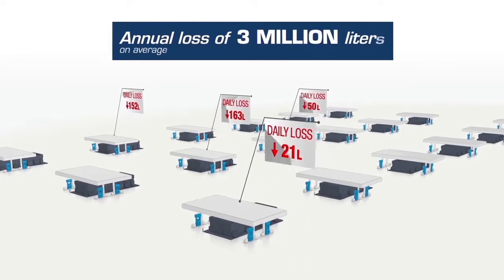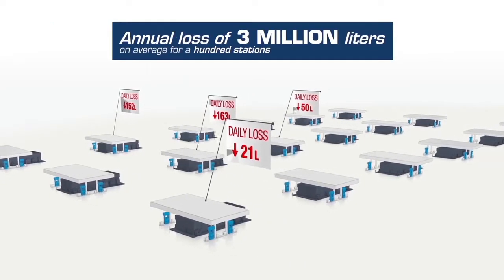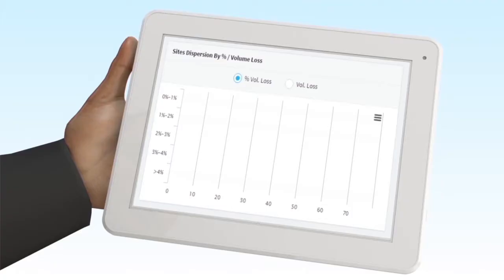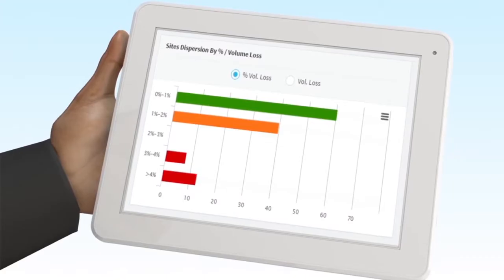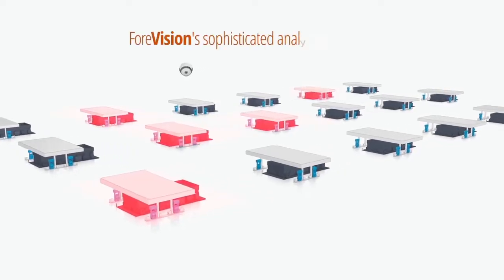A typical station loses 35,000 liters annually, leading to significant financial deficits. 4Vision's wet stock management aims at preventing such losses and achieving higher margins.